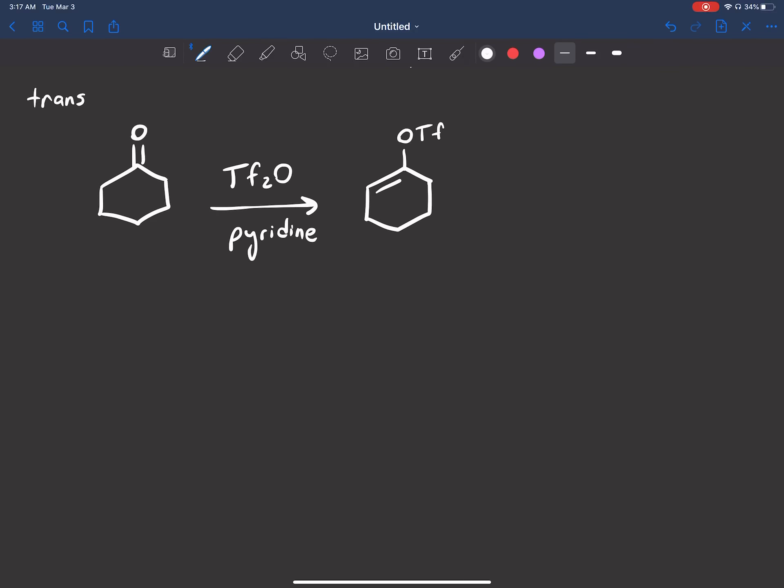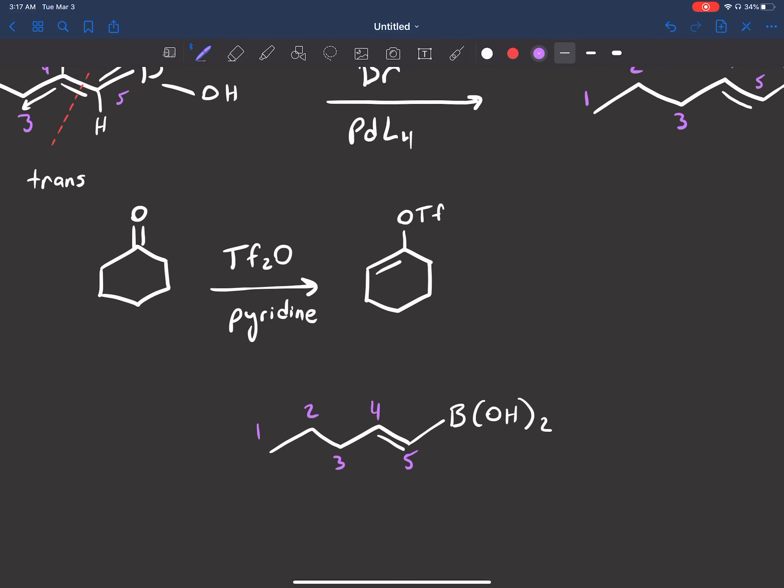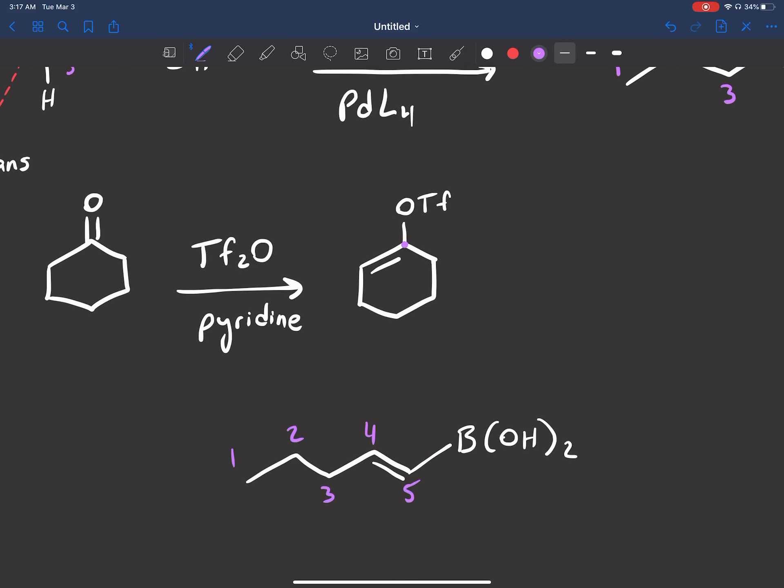So now let's put our boron compound. Let's number: 1, 2, 3, 4, 5. 5 is going to bind to the carbon of that leaving group - instead of a halide, we have a triflate now. It's this carbon, so that's going to be carbon 6. Let's call it 7, 8, 9, 10, 11.